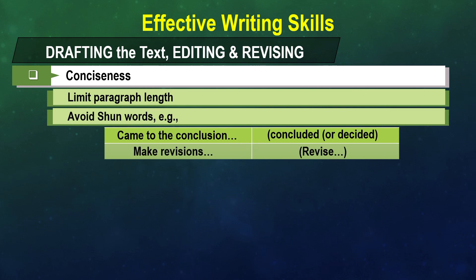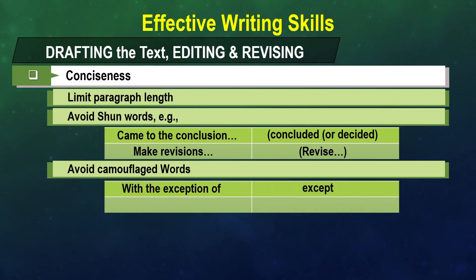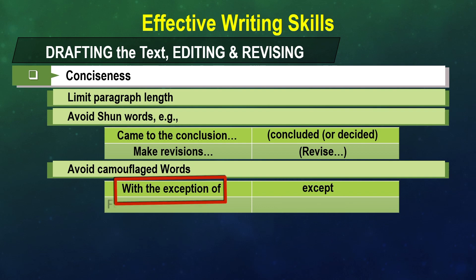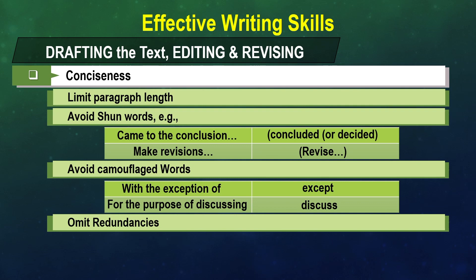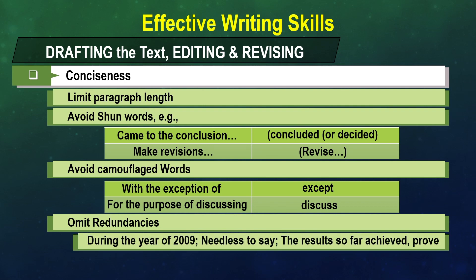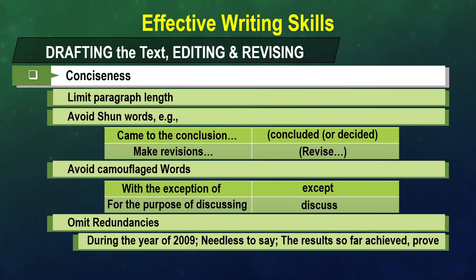Avoid camouflaged words, where the main emphasis is hidden by unnecessary words. For example, 'with the exception of' — the key word is 'except', camouflaged with unnecessary words. Likewise, 'for the purpose of discussing' can simply be written as 'discuss'. Also omit redundancies — unnecessary words. For example, write 'during 2009' instead of 'during the year of 2009'. Avoid phrases like 'needless to say'. Similarly, 'the results so far achieved prove' can simply be written as 'the results prove'.